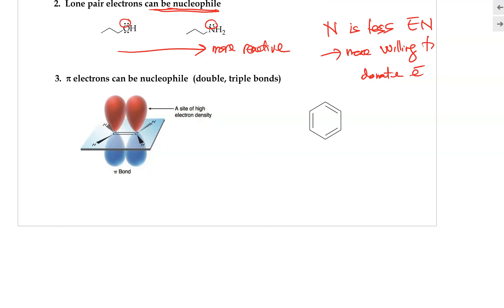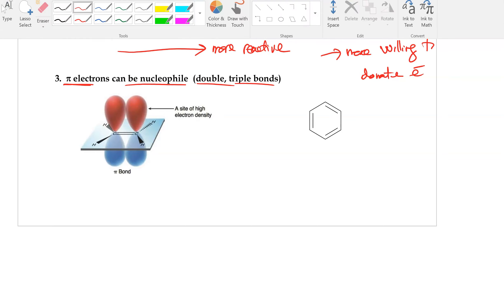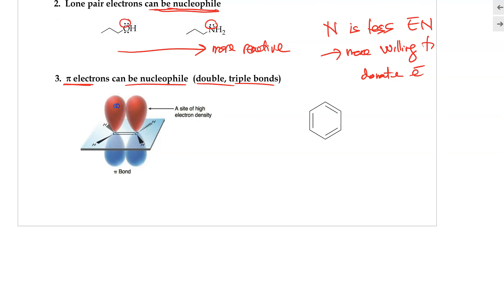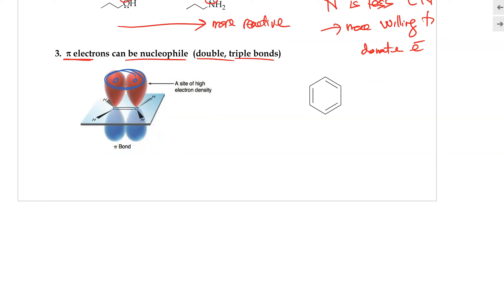The third site of nucleophile is pi electrons, found in double and triple bonds, which can also serve as nucleophiles because they are rich in electrons. For example, in a pi bond such as a double bond, there are two electrons in the pi bond, making up an electron-rich region that can serve as a nucleophile.